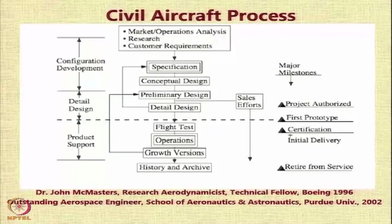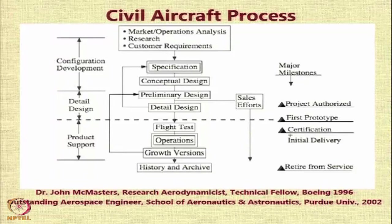For example, you have the Boeing 737, which has come in dash 200, 300, 400, 500, 600, and now they are probably running out of numbers because they already have dash 900. All these are growth versions which involve a little bit of design effort in incorporating these changes, and then finally you have retirement from service and an archival process.